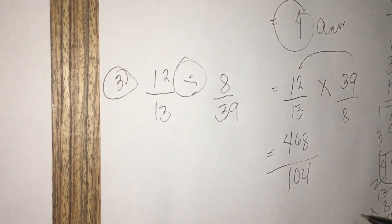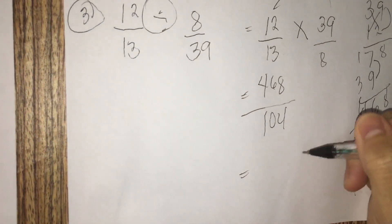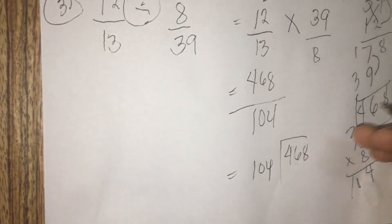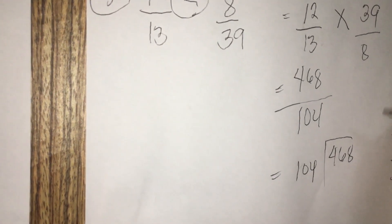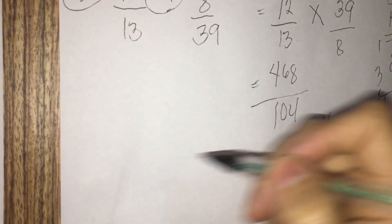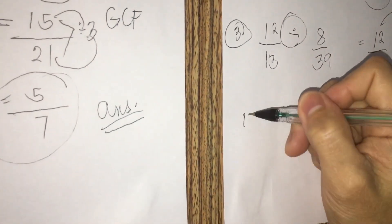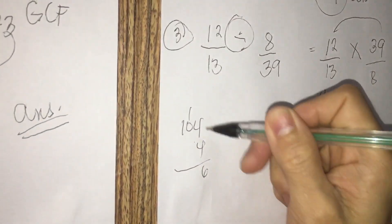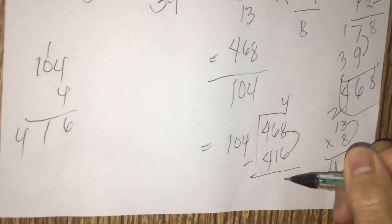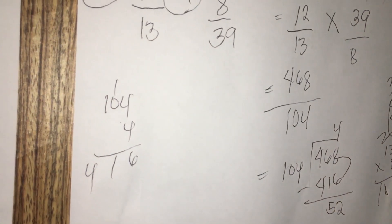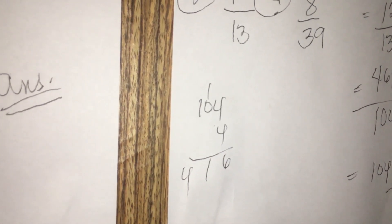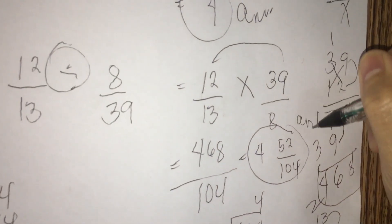So we're going to divide 468 by 104. How many times does 104 go into 468? We write 4. 4 times 104 is 416. Then 468 minus 416: 8 minus 6 is 2, 6 minus 1 is 5 — giving us 52. So our answer here is 4 and 52 over 104. This is our final answer for Method 1 of number 3.